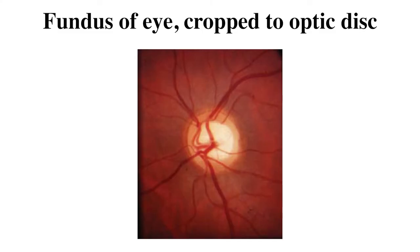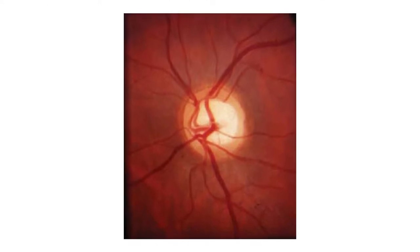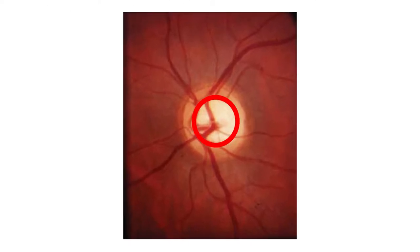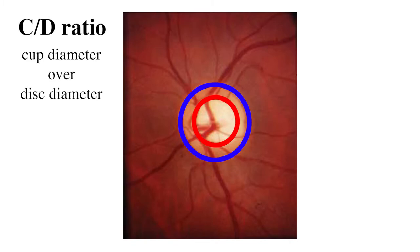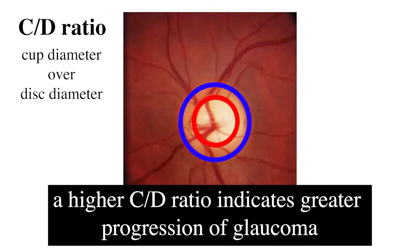Yeah, neither do I. Go rewatch that section. Anyway, Joint Optic Disc and Cup Segmentation basically means the distinction of the optic cup and optic disc in an image of the optic nerve. Once you segment them out, you can calculate the cup-to-disc ratio, which is a very useful measurement in the assessment of glaucoma progression.